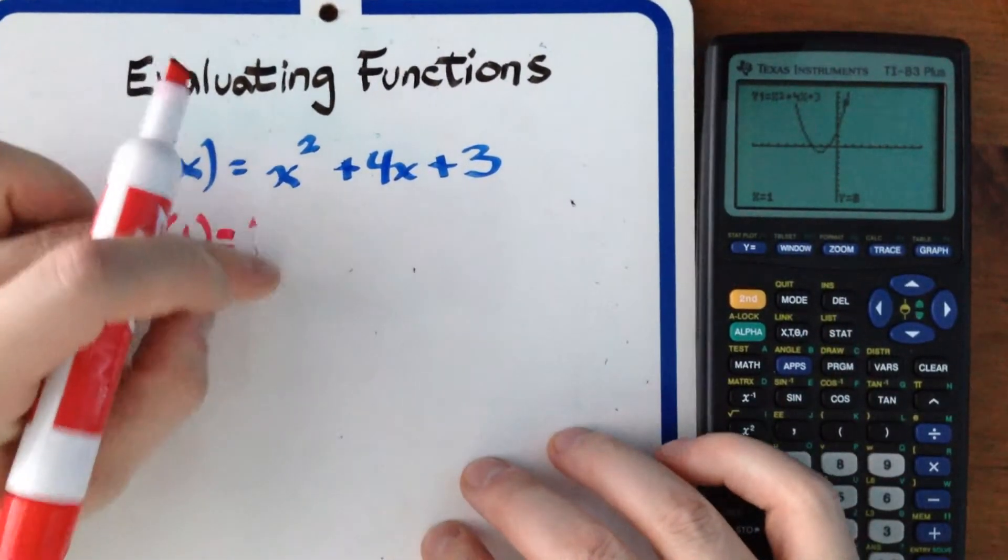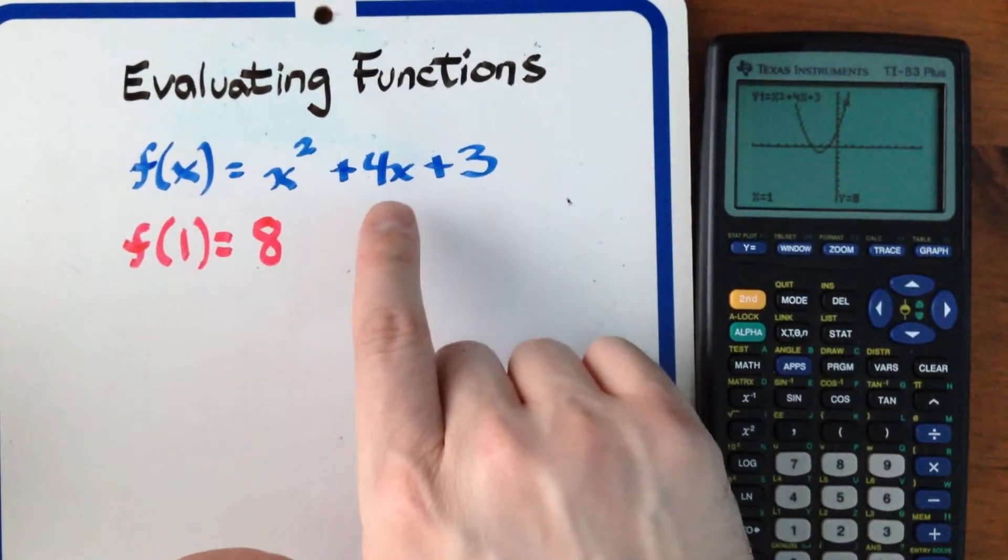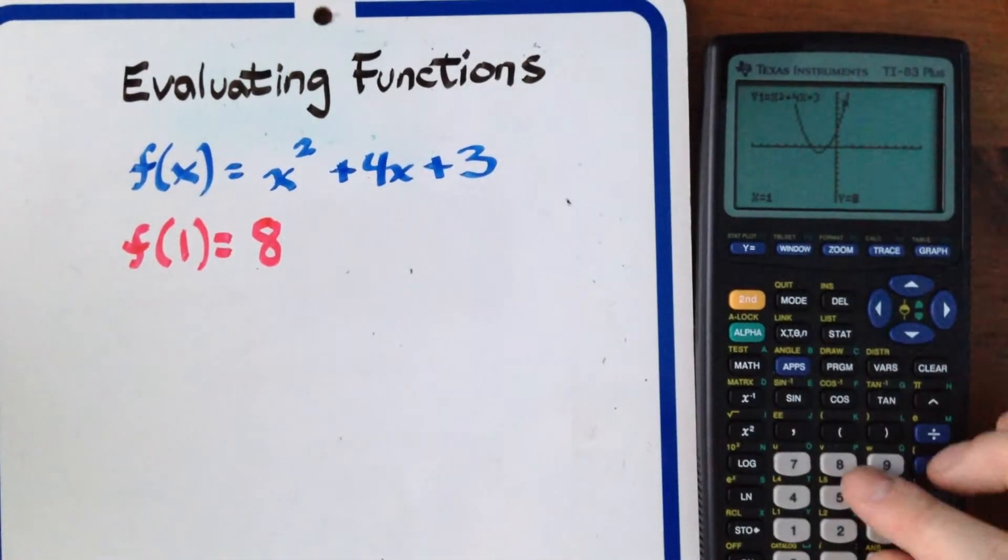So in this case the y is equal to 8 and this makes sense because 1 squared is 1 plus 4 times 1 is 5 so 4 plus 1 is 5 plus 3 is 8 and it works with any number.